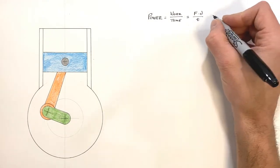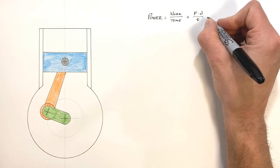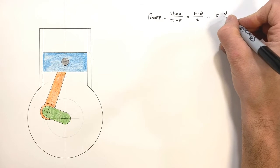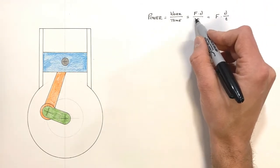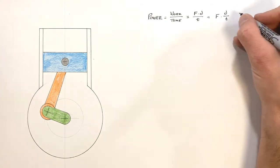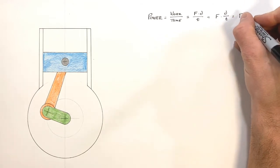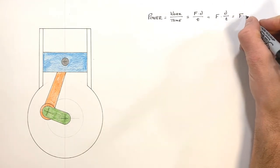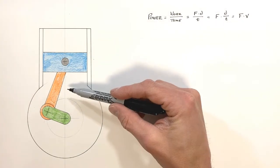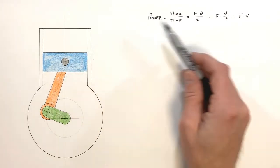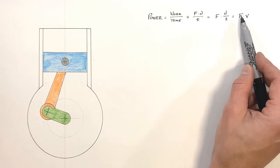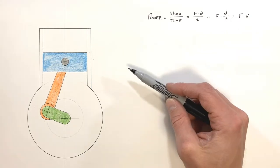If we write this as force times displacement over time, we still have power — we've just rearranged it slightly. Displacement over time is what we call velocity. So we've talked about power as being force times velocity. Today I want to take a look at this engine and relate its motion back to power in a slightly different way — in terms of rotations rather than linear quantities of force and velocity.